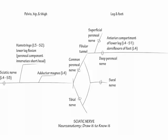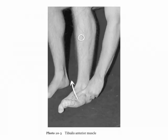The anterior compartment lower leg muscles are tibialis anterior, which L4 primarily supplies; extensor hallucis longus, which L5 primarily supplies; extensor digitorum longus; and extensor digitorum brevis. Dorsiflex your foot — i.e., raise it off of the gas pedal — to demonstrate the action of tibialis anterior.